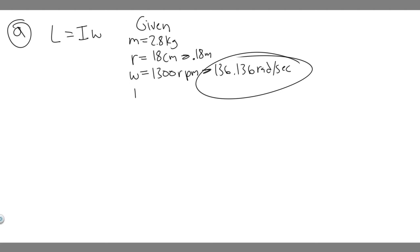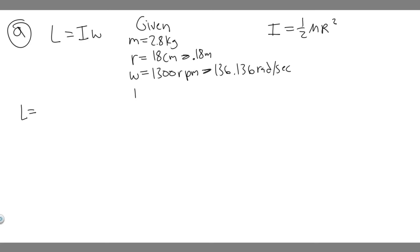Now we have everything in the correct units. We also need to determine which rotational inertia formula to use. In this case, we have a solid cylindrical grinding wheel, so the formula is I equals one half m r squared. Your textbook should have a list of these equations for different object types.